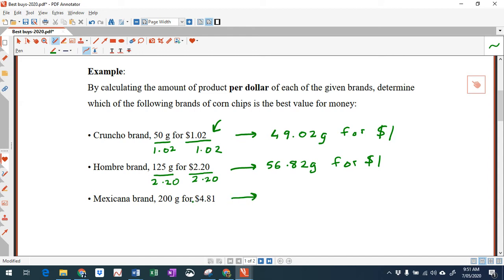Let's do the last one now. Same step as before. I divide by the amount in dollars, so 4.81. Do the same thing over here, 4.81. Okay, so now work out what 200 divided by 4.81 is. You get 41.58, and that's grams. So you can see here I get, for the Mexicana brand, 41.58 grams for $1, 56.82 grams for $1 for the Hombro brand, and 49.02 grams for $1 for the Cruncho brand.